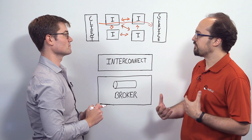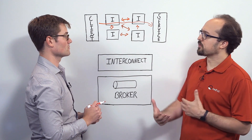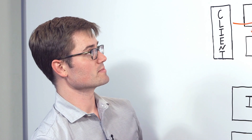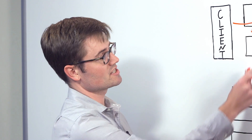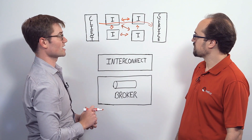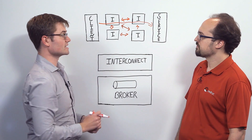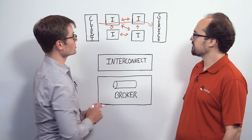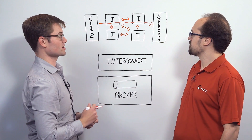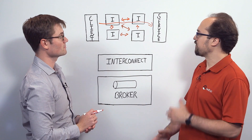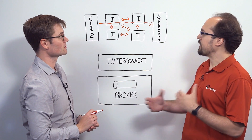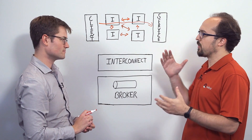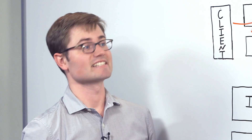How is that different from a broker and a network of brokers? It's different because no messages are stored on these interconnect nodes. Instead, it just passes the message right through to whatever will eventually process it. So basically all of my acknowledgements are end-to-end instead of going hop-to-hop through brokers. Exactly.